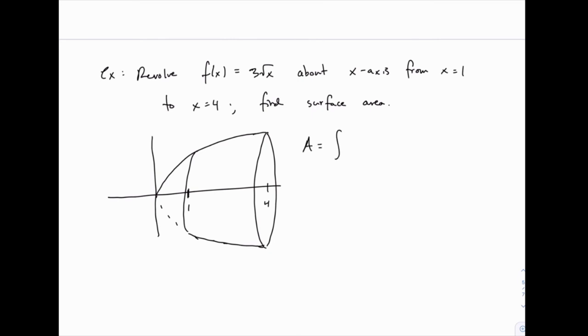We have the integral of 2π times our function, 3 square root of x, times the square root of 1 plus its derivative squared.